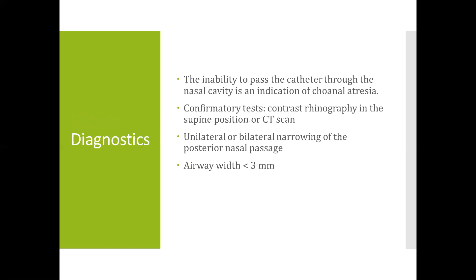Regarding diagnostics, the inability to pass a catheter through the nasal cavity is an indication of choanal atresia. Confirmatory tests include contrast rhinography in the supine position or a CT scan, showing unilateral or bilateral narrowing of the posterior nasal passage with airway width of less than 3 mm.